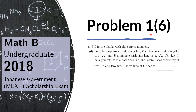Problem 6 of 1. Let S be a square with side length 1. T a triangle with side lengths 1, 1, square root of 2. And R a triangle with side lengths 1, square root of 2, square root of 3. Let C be a pyramid with a base that is S and lateral faces consisting of 2 T's and 2 R's. The volume of C then is blank.